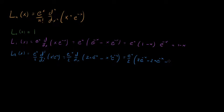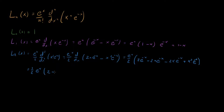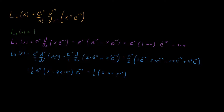Taking the second derivative and multiplying by e to the x over 2: differentiating the first term gives 2 e to the minus x minus 2x e to the minus x, and the second term gives minus 2x e to the minus x plus x squared e to the minus x. Combining, we get one half times (2 minus 4x plus x squared) after the e to the x cancels.